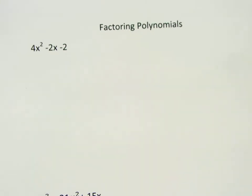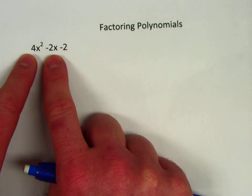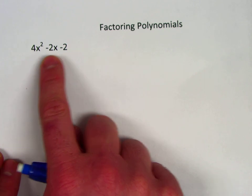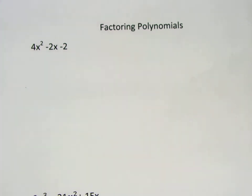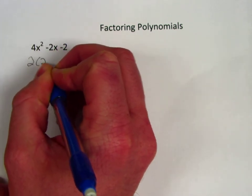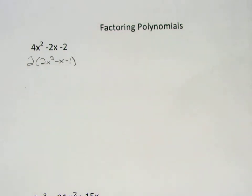What we need to notice and what we need to get in the habit of looking for every time is seeing if there's a GCF or a common factor, or just any common factor between the three terms. I can see that in this trinomial they all have a 2 in common, so before I can start factoring with the box method I need to make sure I factor out that GCF.